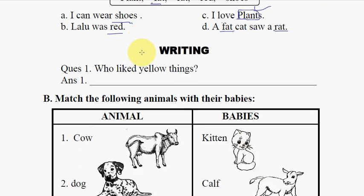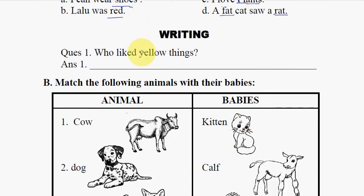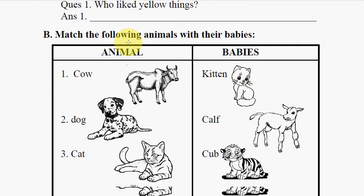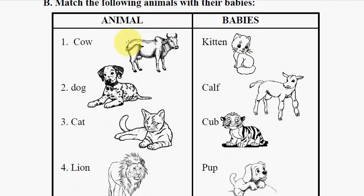The second section is the writing section. The question is: who liked yellow things? Here the student can write the answer. This is the writing section.